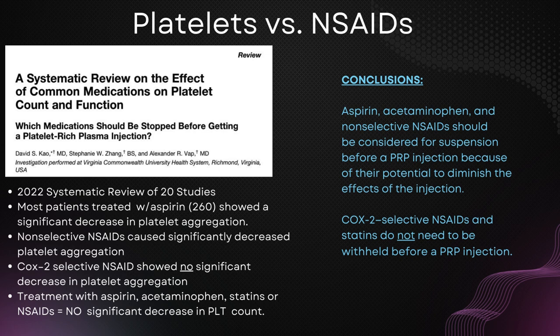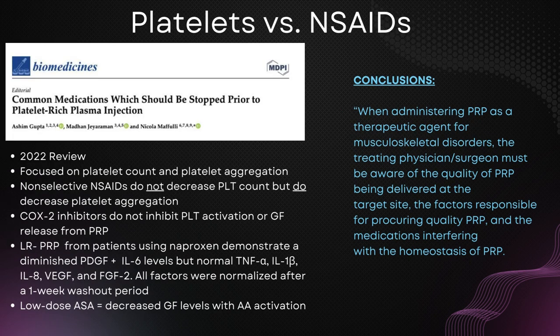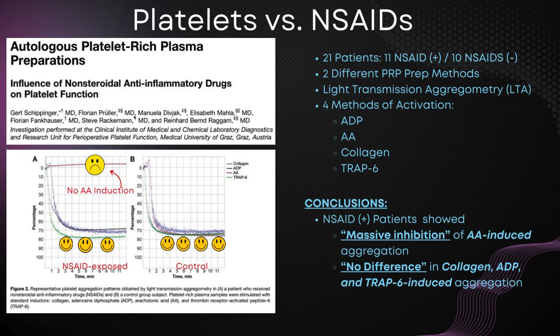They concluded that selective COX-2 NSAIDs do not need to be withheld prior to PRP injections. Gupta and his group also concluded that non-selective NSAIDs do not decrease platelet count, but do decrease platelet aggregation. Platelets from patients taking naproxen had decreased PDGF and IL-6 levels. COX-2 specific drugs had no effect on platelet aggregation or growth factor release from PRP. Patients taking low-dose aspirin did show decreased growth factor levels in PRP.